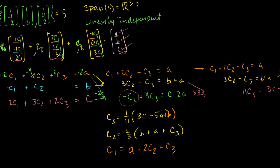You can give me any real numbers for A, B, and C. I can always give you a corresponding C3, then C2, then C1. There's no division by zero to worry about — these are just linear combinations of real numbers. So I can definitively say that these three vectors do indeed span R3.